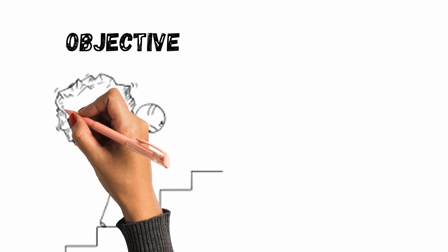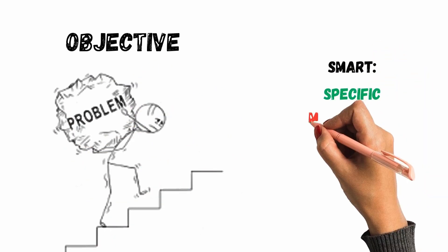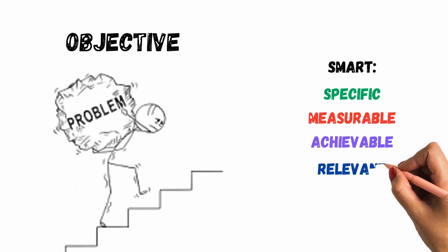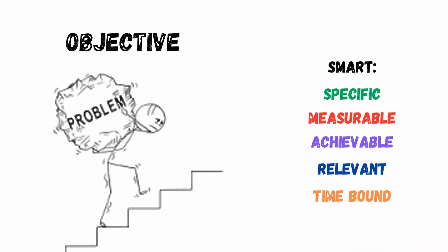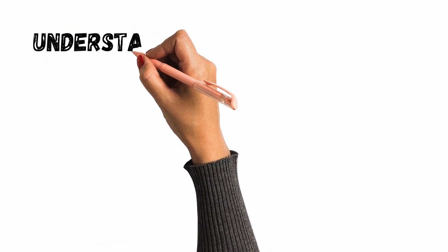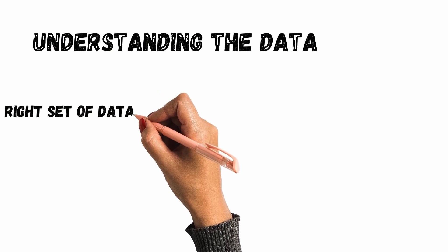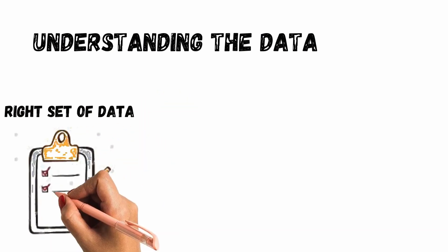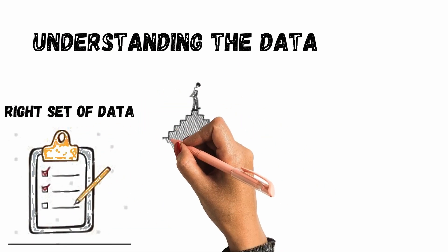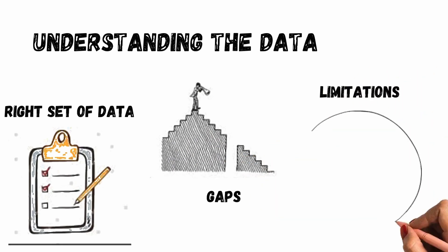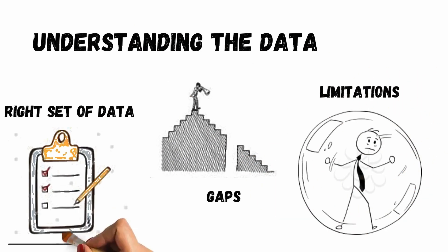The first element is objective — this is where we define what problem we want to address and set the objective in a SMART manner, meaning specific, measurable, achievable, relevant and time-bound. The second is understanding the data: we identify the right set of data required for our objective, eliminating unwanted data, then exploring the data and identifying gaps and limitations in our current dataset.